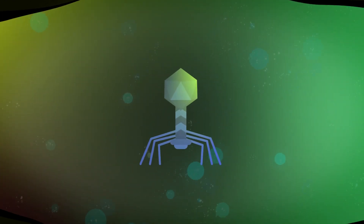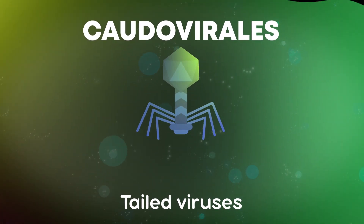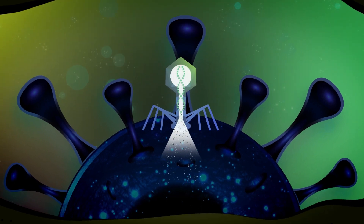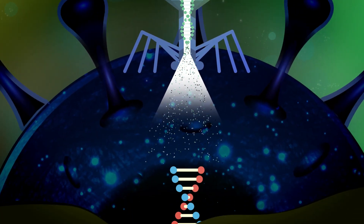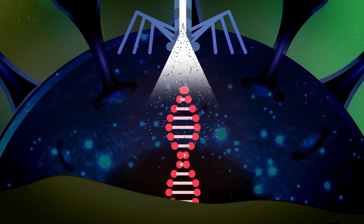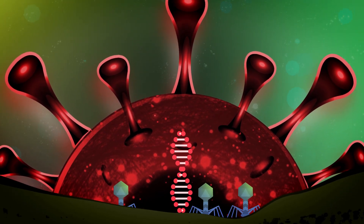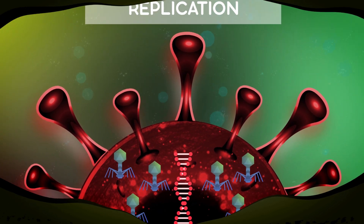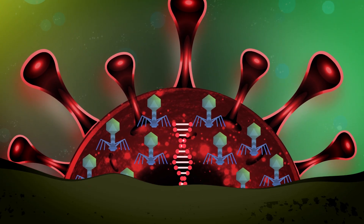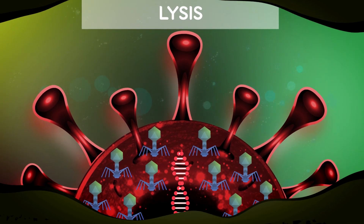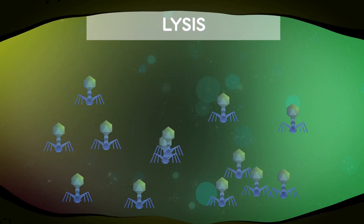On your screen you can see a representative of the order Caudovirales, or tailed viruses. It resembles a molecular syringe. When a virus binds to a bacterium, it literally injects its genome — double-stranded DNA — into the cell and leaves its protein coat outside. The instructions of the bacteriophage become mixed with those of the infected cell, and its usual life activity ceases. The cell begins using its resources to produce new genomes and proteins of the virus — this stage is called replication. The cell wears and tears, spending all its resources to produce as many viruses as possible. The final stage, lysis, is approaching. New viruses fill the entire space, the host cell breaks, and a new portion of viruses enters the environment.